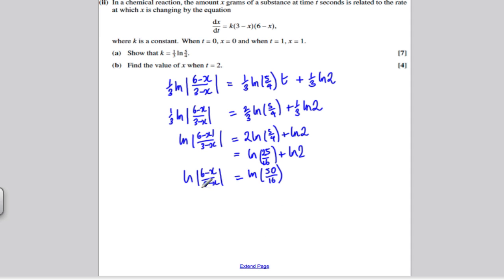So if 2 ln's are equal, the number inside the ln's must be the same. So (6-x)/(3-x) must be equal to 50/16. Multiply both sides by 16 and multiply both sides by (3-x). You get the following. 16(6-x) is equal to 50(3-x). Multiplying out, 16 times 6 is equal to 96 minus 16x is equal to 150 minus 50x.